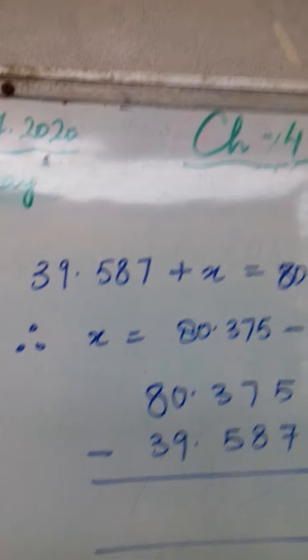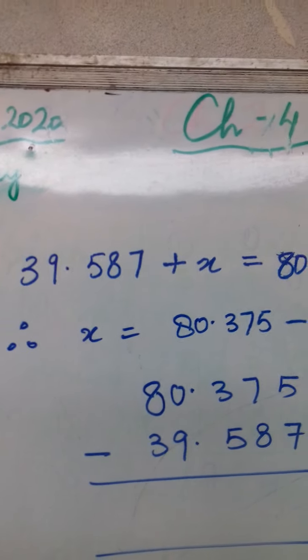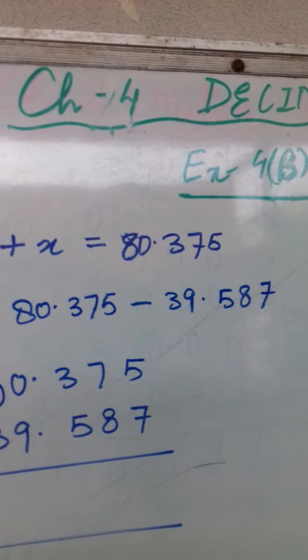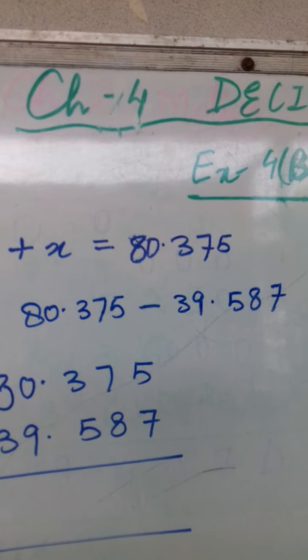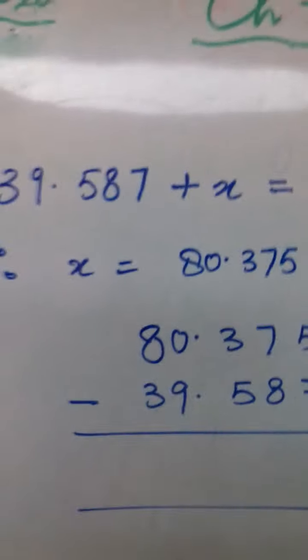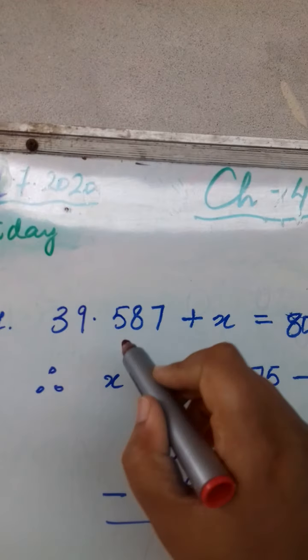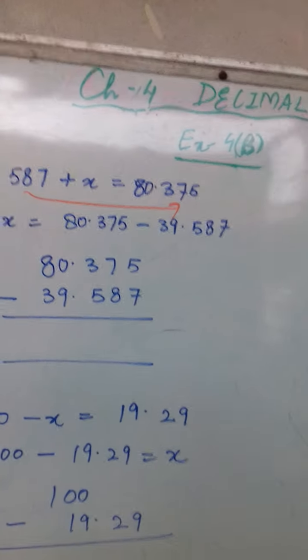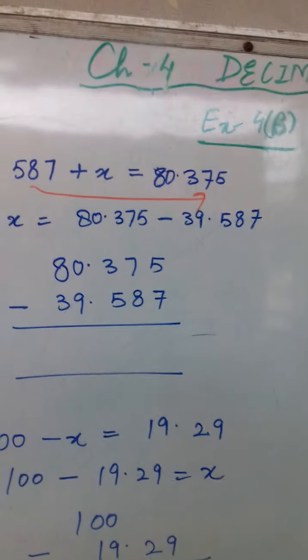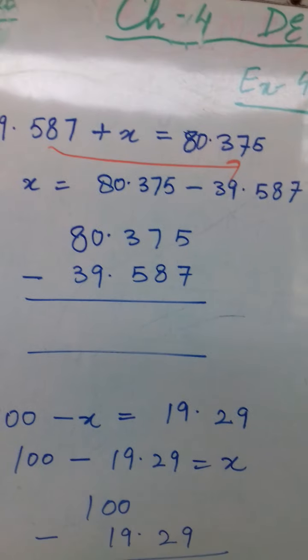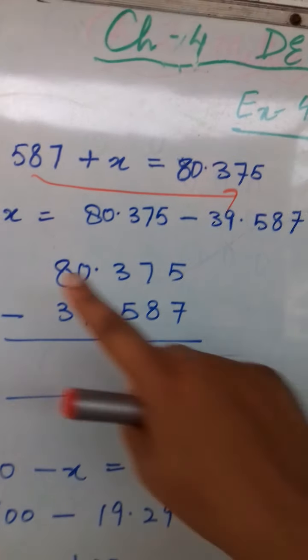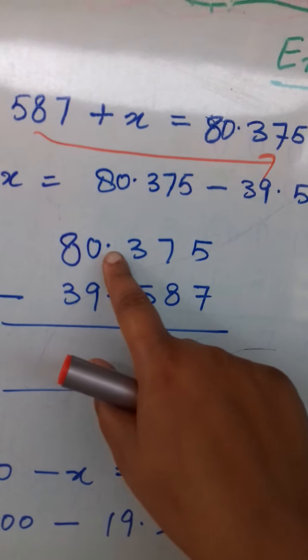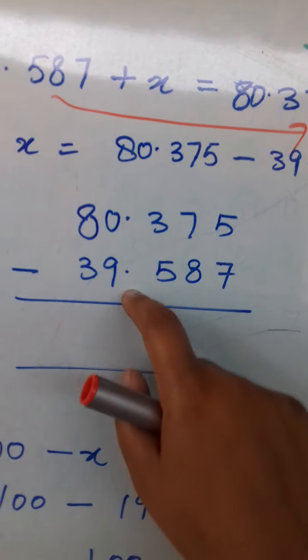What should be added? So let us add x. So 39.587 plus x will give us 80.375. Therefore x will be 80.375. This will go to that side, so it will turn to minus 39.587. Now subtract 39.587 from 80.375. Write it down in a proper way such that the decimal comes below the decimal.